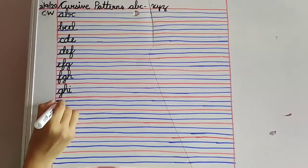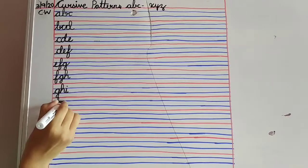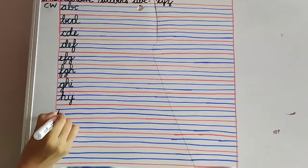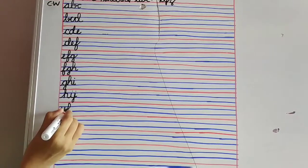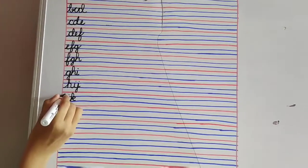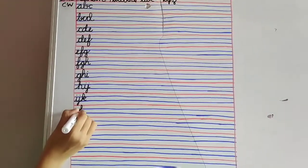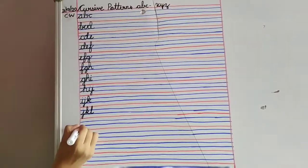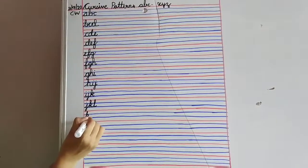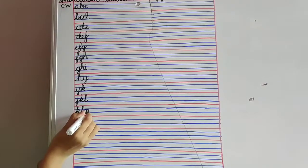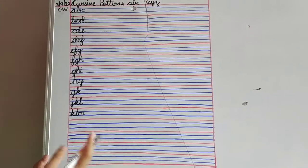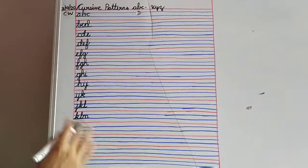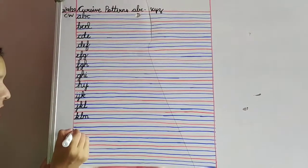Now, next letter will be H-I-J. Next, I-J-K. J-K-L. K-L-M. Keep practicing it for one time, two times. Please keep practicing in your rough book also so that it will be more easy for you to learn.